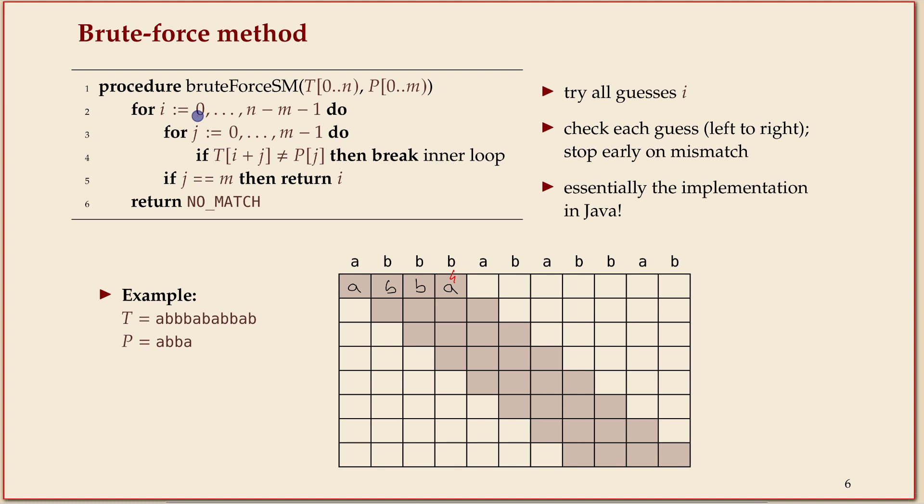We go to the next position of i and we try again to align our pattern here. But already after the first character, a and b don't match, so we move to the next guess. And here the same happens. So you see, even the brute force method is often lucky enough that it doesn't have to do all the checks just because it might get a mismatch early on.